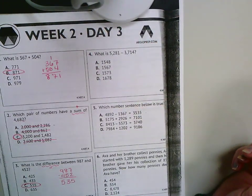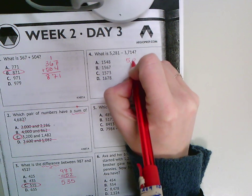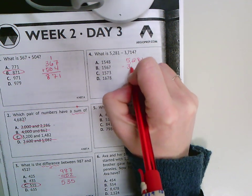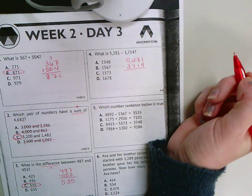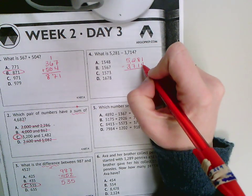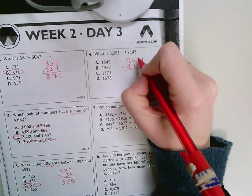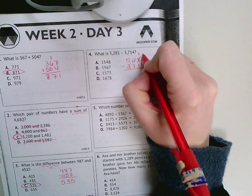Number four is another subtraction problem. So I'm going to set up 5,281 minus 3,714, making sure all my place values are nice and lined up. I can't take away 4 from 1, so I'm going to borrow. The 8 becomes a 7 and the 1 becomes an 11.